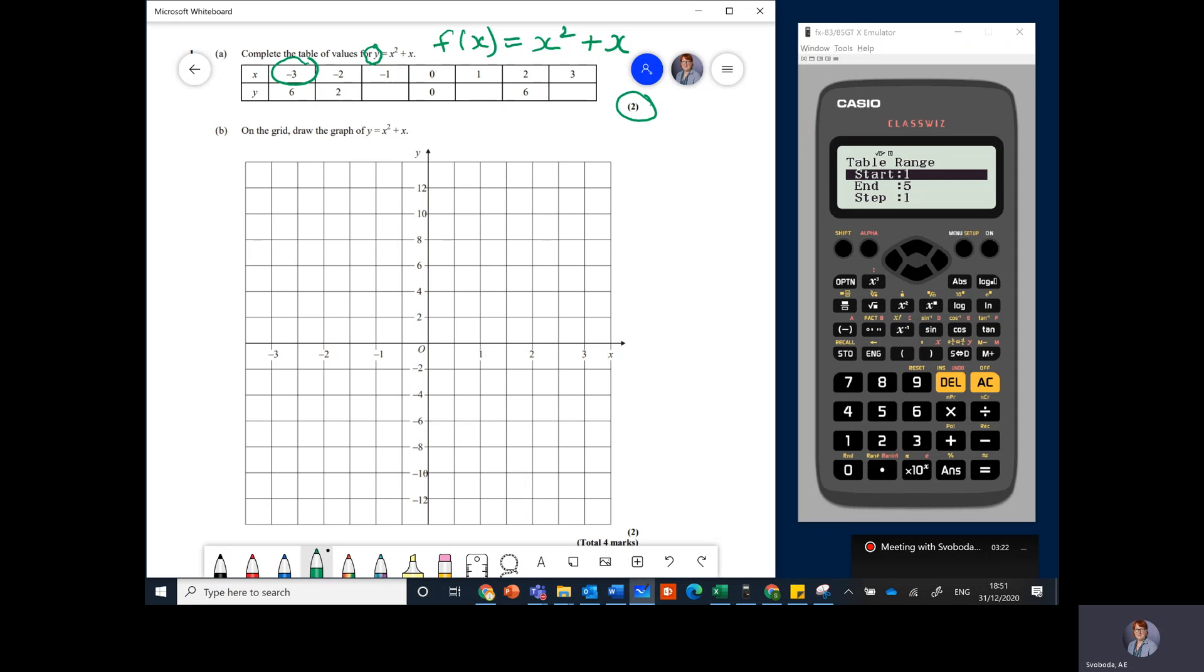So just type in minus three, press equals. The end value of x is three, so press three equals. Now the step size is what steps it goes up in - it's almost always one. So in this case x is going up in one, so we leave it at step one and we press equals. Now what it's given us is a table of the values. Remember f of x is y in this case.